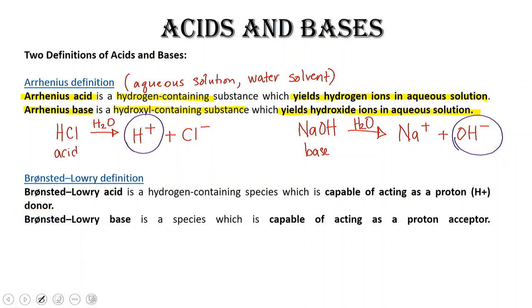A Bronsted-Lowry acid is one in which it has to contain hydrogens because it's going to donate those hydrogens in solution. And we can say those hydrogens are considered hydrogen ions, and we call those protons.